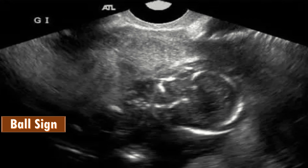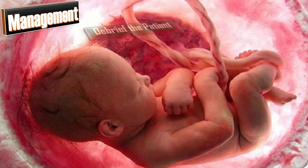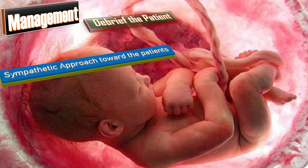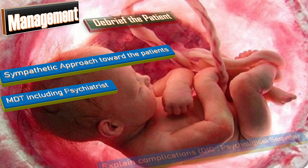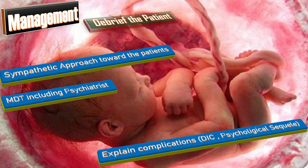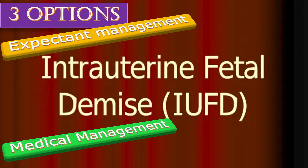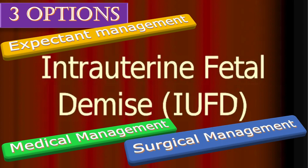In management, first debrief the patient regarding the diagnosis, the complications, and the plan of management. Have a sympathetic approach toward the patient and involve a multidisciplinary team including a psychiatrist. Explain complications like DIC, psychological sequelae, and other complications depending upon the patient's condition. We have three management options: expectant management, medical management, and surgical management. Give all three choices to the patient and, after discussion and depending on her overall case, plan one management.